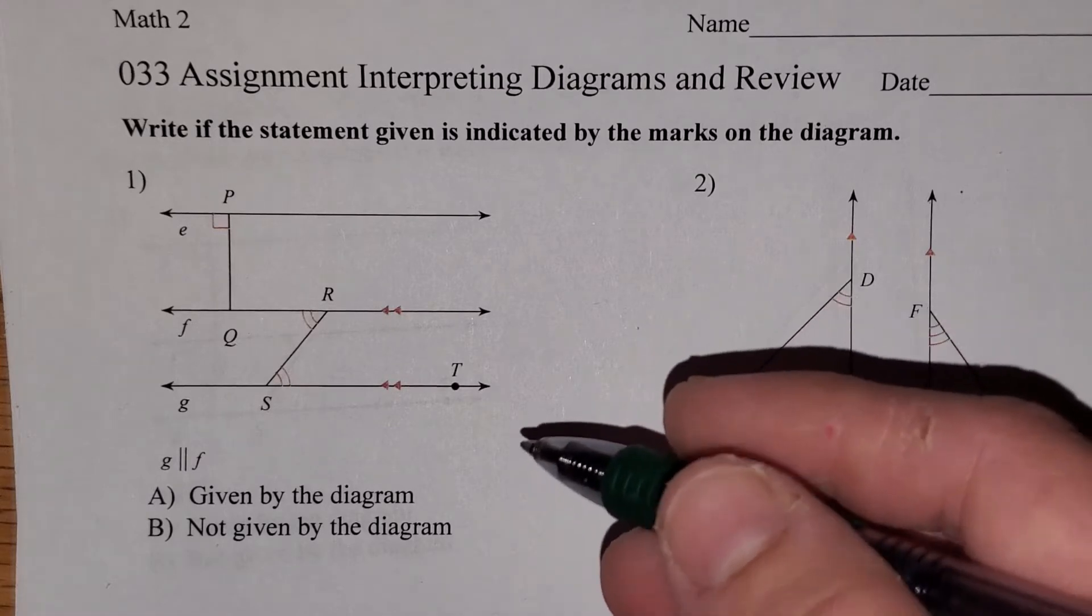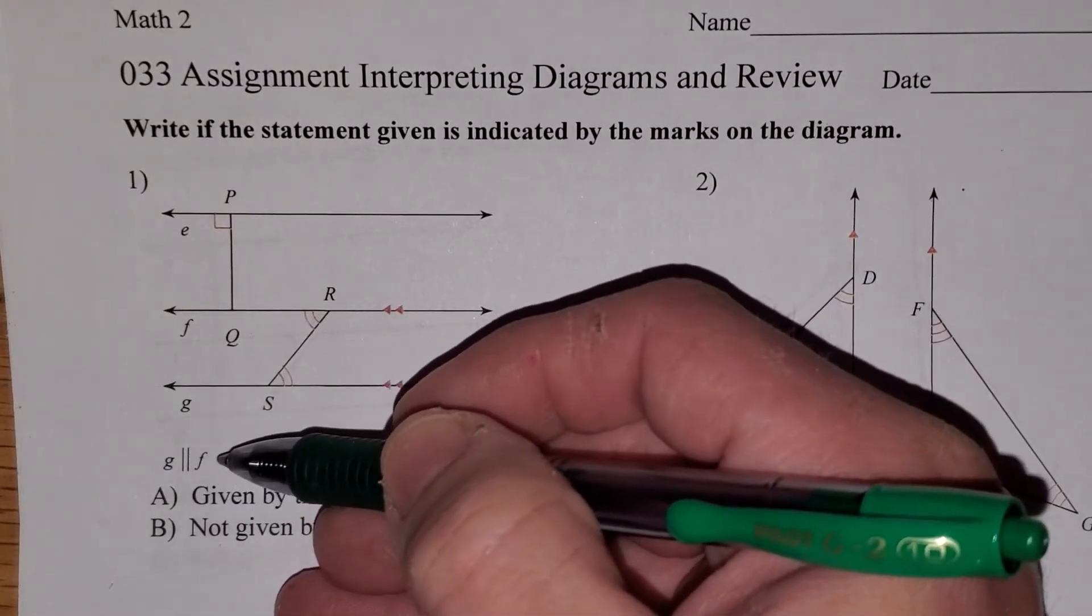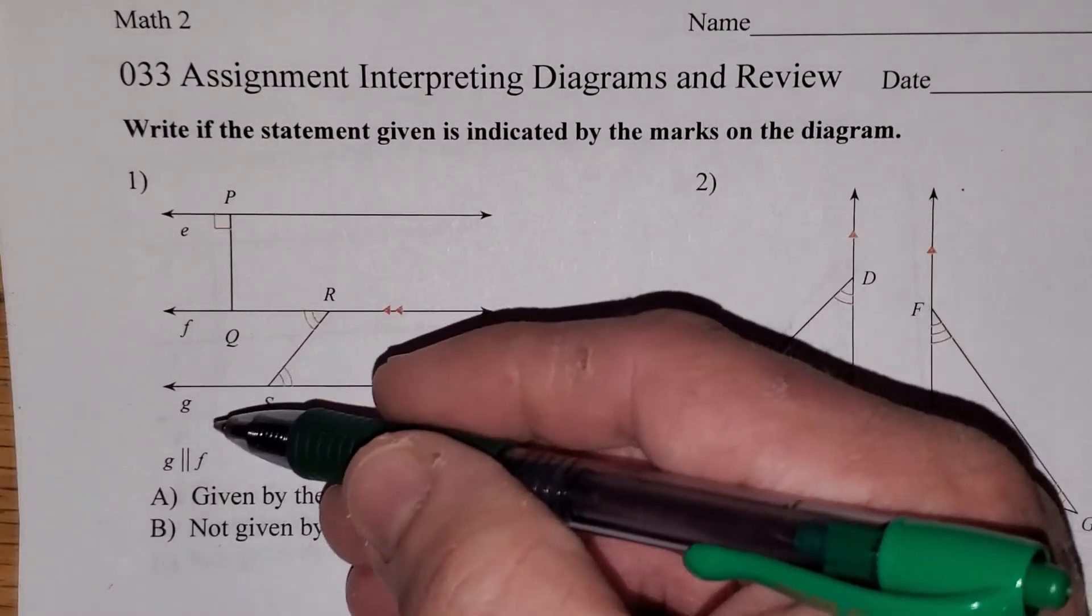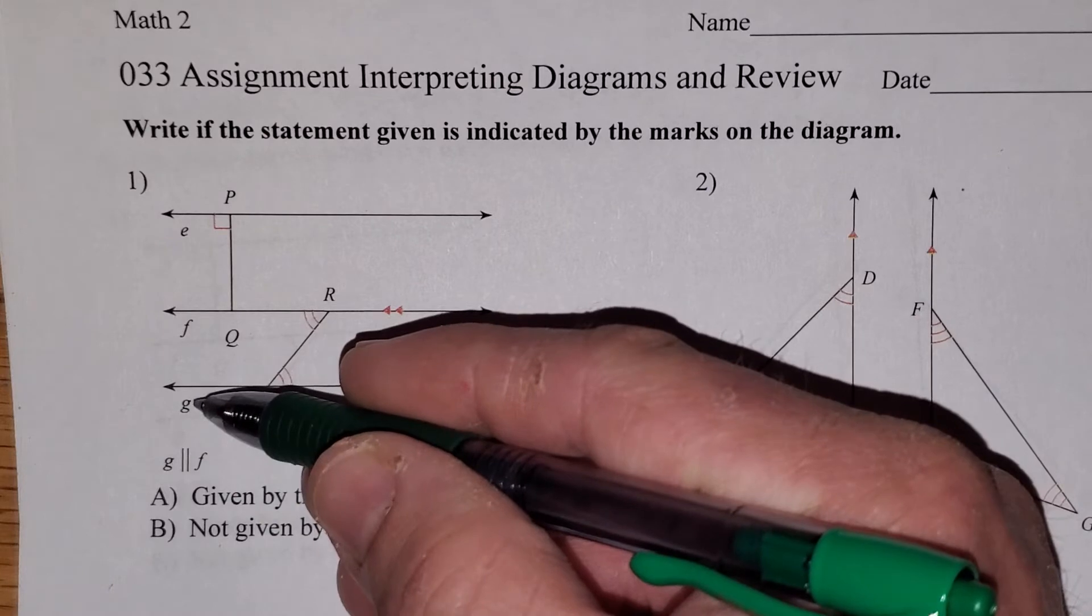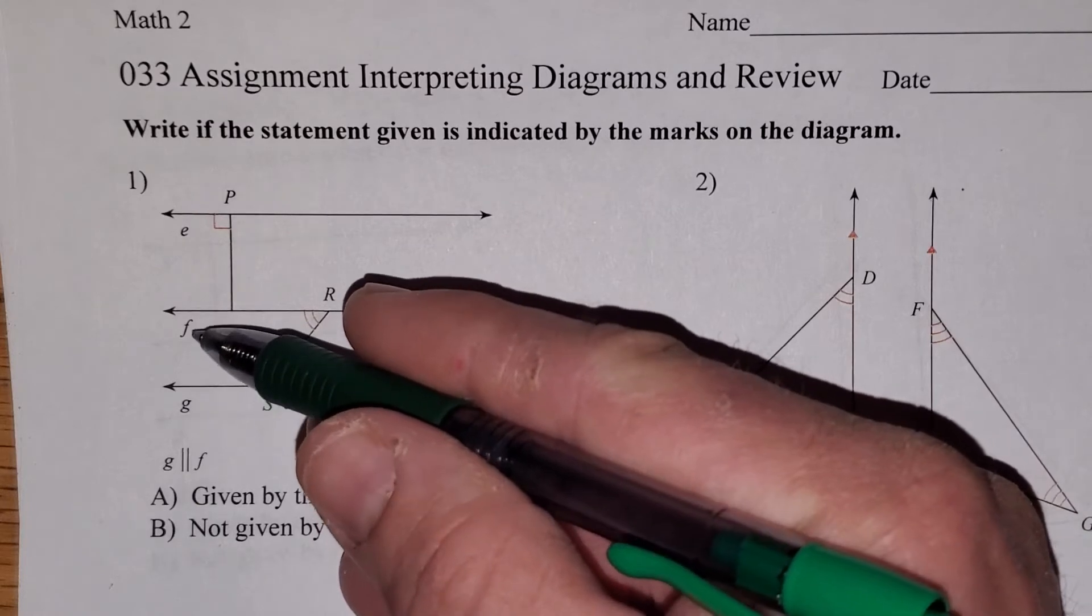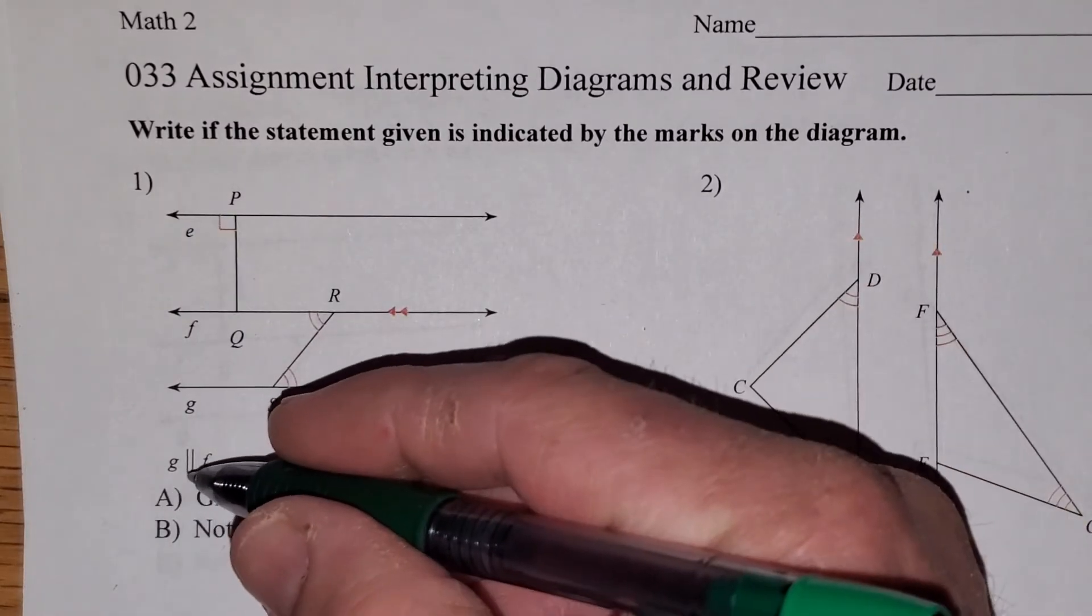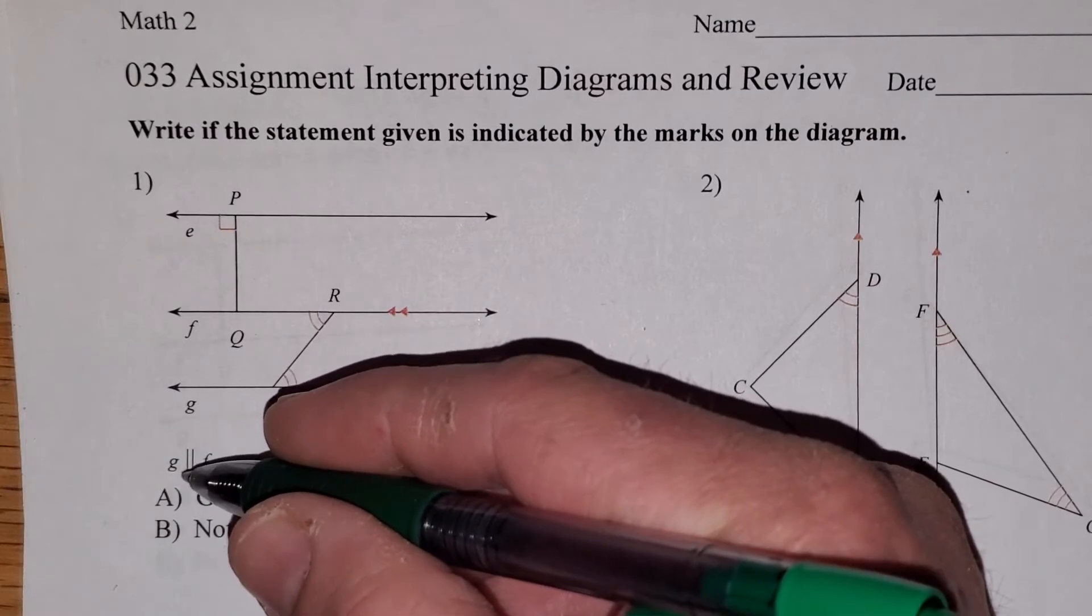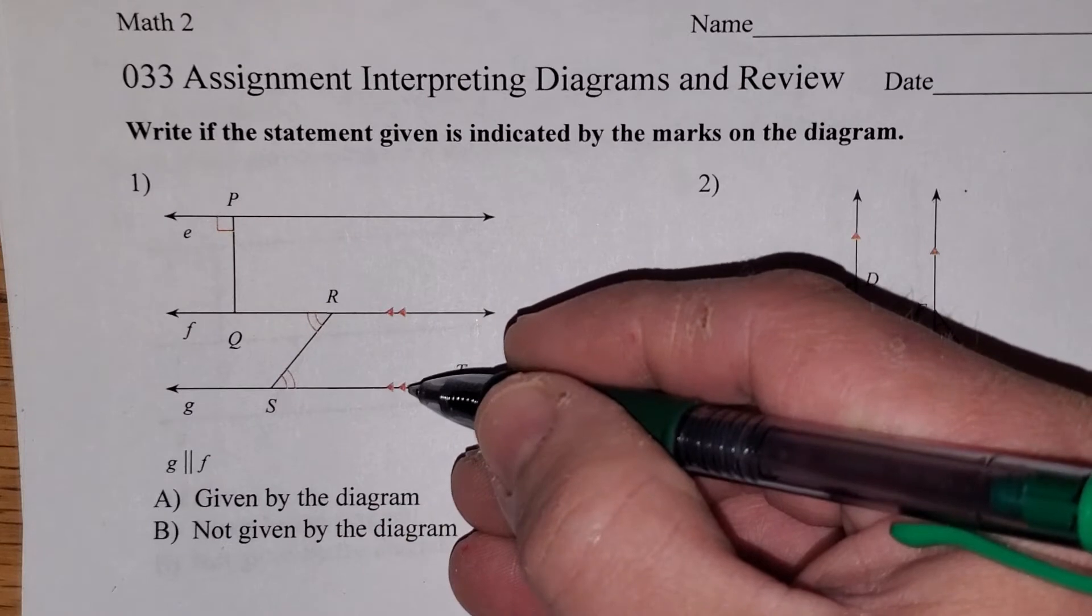Now, really quick, I do want to talk about whether G is parallel to F and what that means. They're labeling the lines here using simply the lowercase letter that they've identified the line by. So you have lines G, F, and E. And whether G is parallel, that's what the two vertical bars indicate, parallel to F, is actually going to be true.